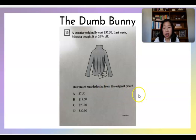Next, this sweater. A sweater originally cost $37.50. Last week, Moesha bought it at 20% off. How much was deducted from the original price? Okay. So keyword here is deducted. And I can look at these choices, $7.50, $17.50, $20 or $30. If I'm looking at the original question, it costs $37 and it's on sale for 20% off. Well, okay. I can have my students think of this as, let's just round this. $37, let's round it to a nice even 10. So $37 would round up to $40.